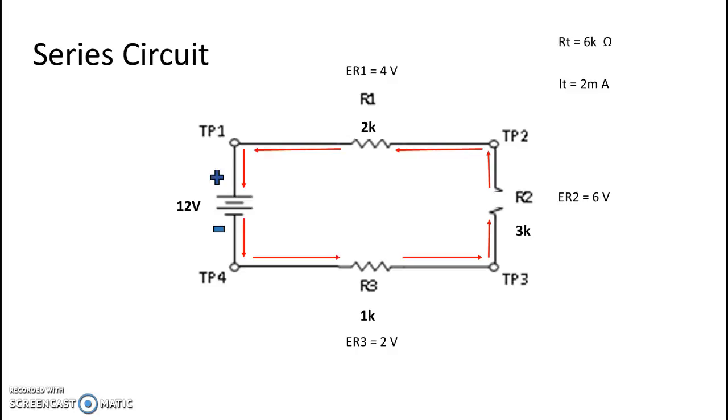In this particular scenario we are going to open R2, and there you can see it on your screen. With R2 open there is no path for current, and without a path for current you'll see all the red lines going away. There is no continuous line from the negative to the positive side of our power supply. Since there isn't, current cannot flow. Since we have no current flow and we have an open in our circuit, our resistance goes from 6k to maximum or infinite, and our current goes from 2 milliamps to 0.